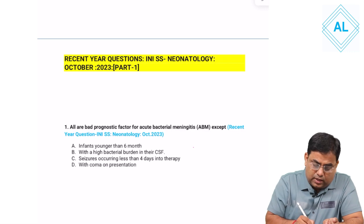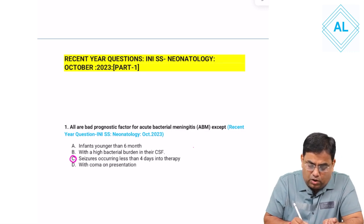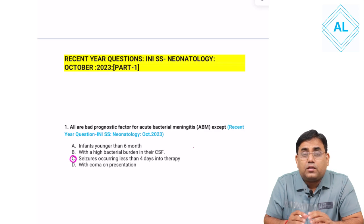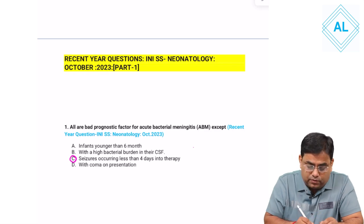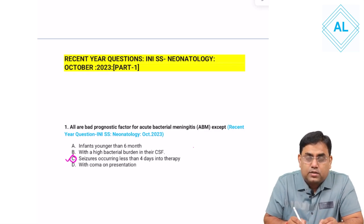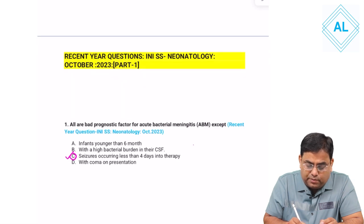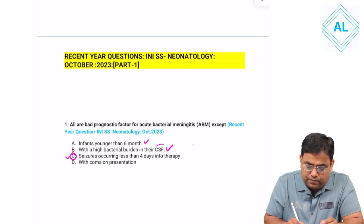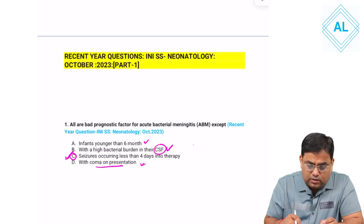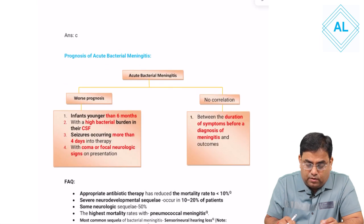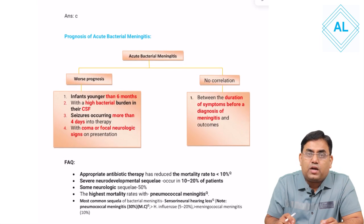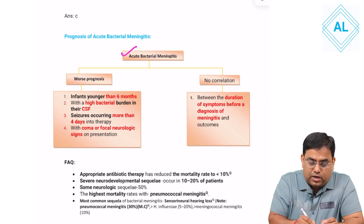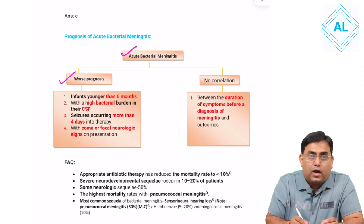The answer is seizure occurring more than 4 days when the child is into the therapy. Others are bad prognostic factors — that is, infants younger than 6 months, high bacterial burden in the CSF, and coma on presentation. So the answer is seizures occurring more than 4 days. These are the frequently asked question points for acute bacterial meningitis with poor prognosis.